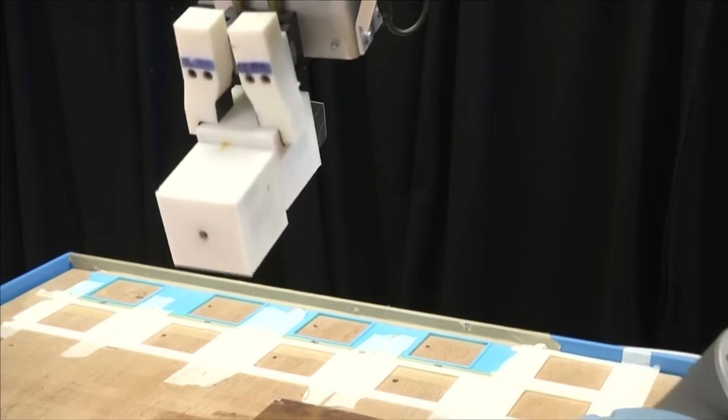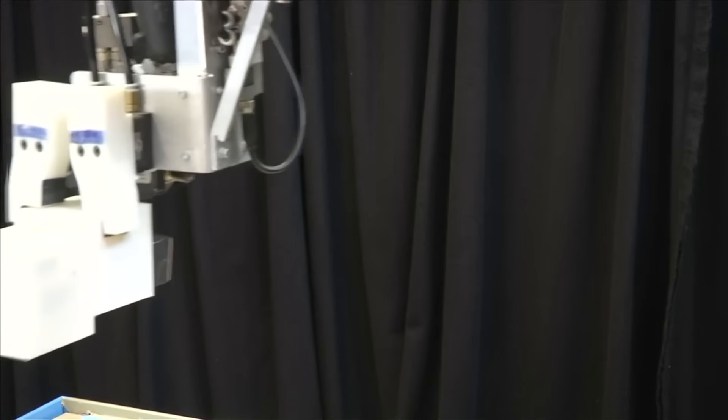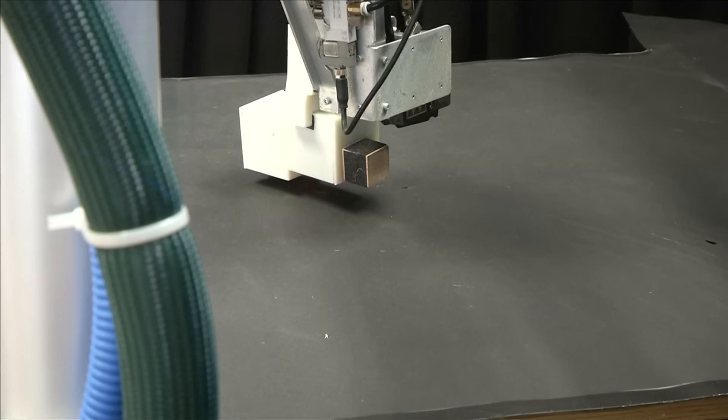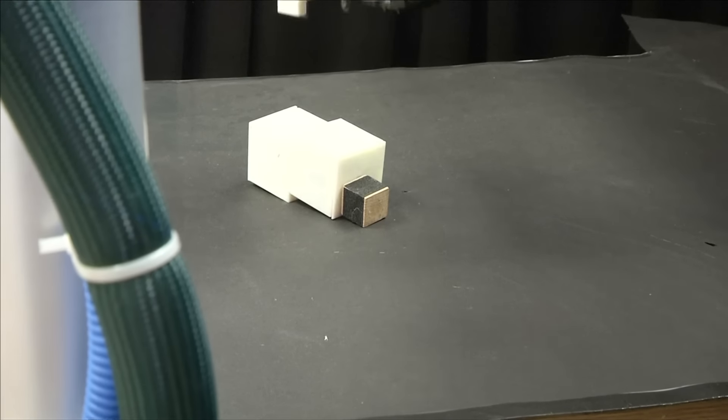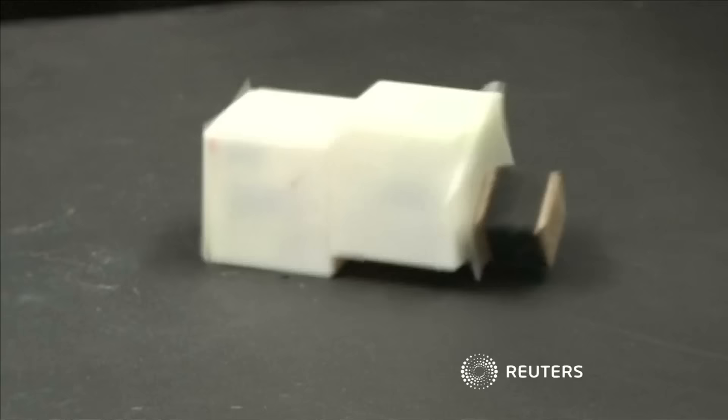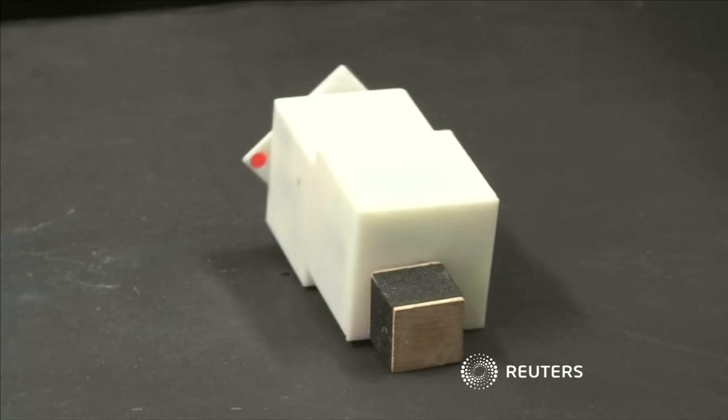The scientist's current automaton takes about ten minutes to design, build and test its babies. Their next step is to use a computer simulation to pre-select the best robot designs and use real models for actual testing. As Charles Darwin might have said, it's robotic survival of the fittest.